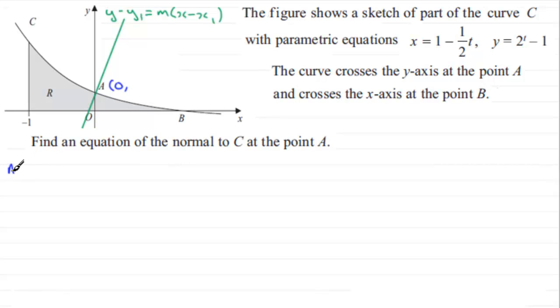At A, x equals 0. If x equals 0, it follows that we've got 0 equals 1 minus a half t. If we add half t to both sides, half t would equal 1. Multiply by 2 and you end up with t equaling 2.